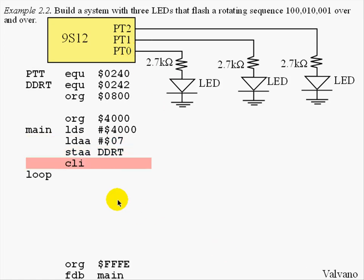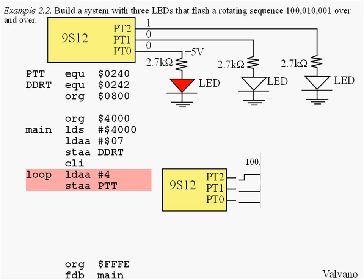The CLI instruction will clear the interrupt flag, and this is important when we run on the real hardware. The next instruction will set the output of port T to a 4, which is the pattern 100, causing the first LED to come on.